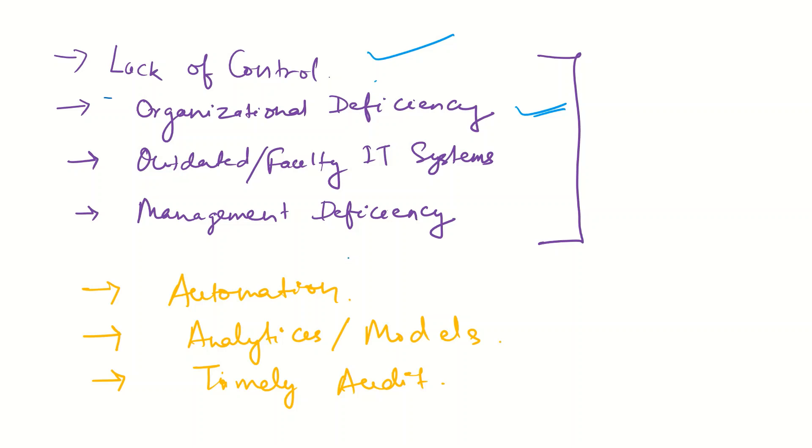That's the organizational deficiency where you do not have a proper organizational setup and no one is accountable for the activities being done. Accountability is very important when it comes to having a good organizational structure. Then you have outdated or faulty IT systems.